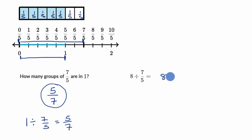We could view it this way: eight times one divided by seven-fifths, or you could just view this as eight times the reciprocal of seven-fifths, which is five over seven. And we've learned how to multiply this before. Eight times five-sevenths is going to be equal to forty-sevenths.